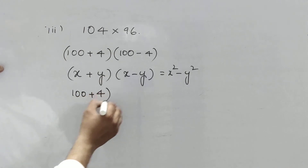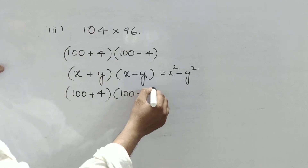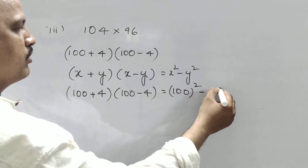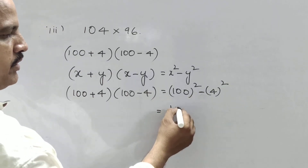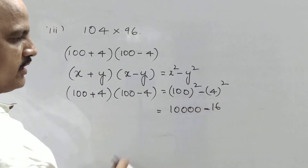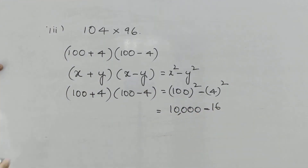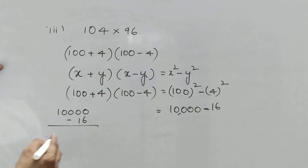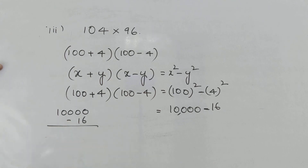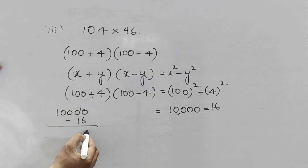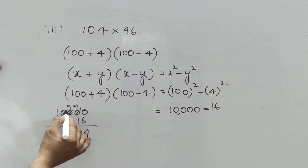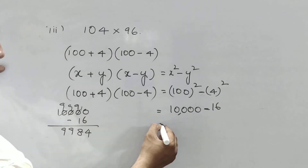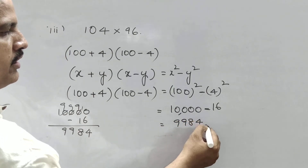So 100 plus 4 into 100 minus 4 gives 100² minus 4². 100 squared means 10,000; 4 squared is 16. So 10,000 minus 16. Be careful here — you will lose marks here only. In flow, you might write 10,016 which is wrong. You have to borrow: 10 minus 6 is 4, then 9, 9, 9. So 9,984 is the solution.